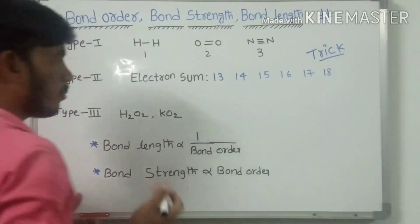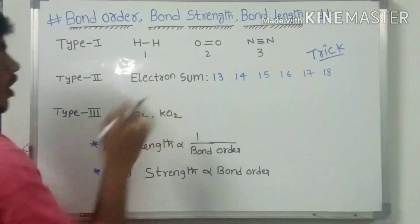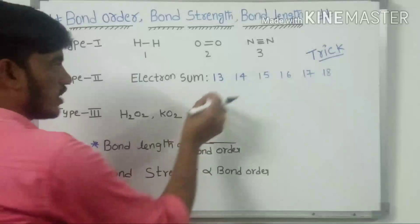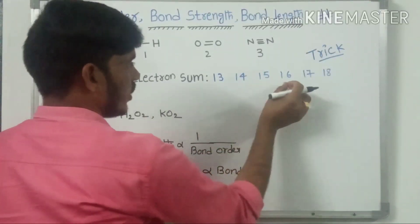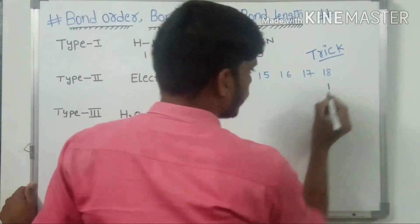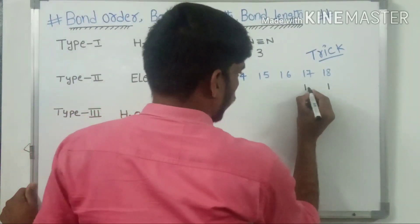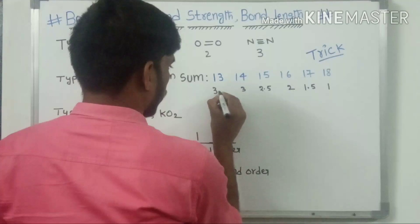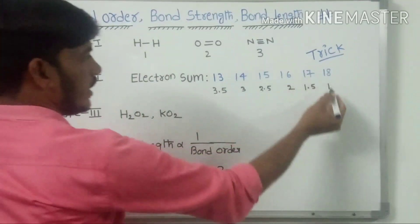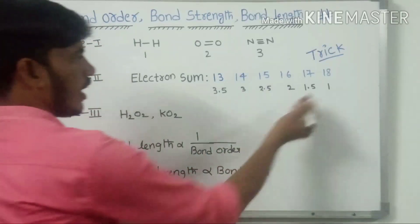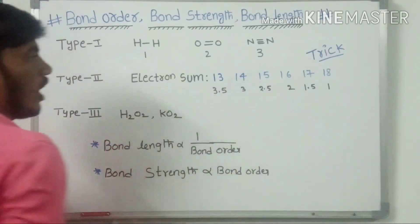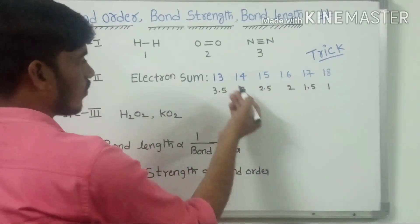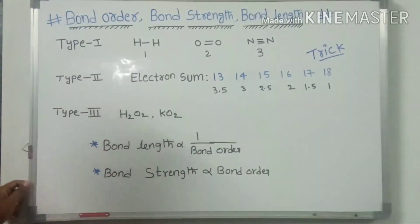Another type is based on the sum of electrons. This is the trick for bond order, bond strength, and bond length. To find the bond order, find the total electron sum. The table is: 18 electrons → bond order 1; 17 → 1.5; 16 → 2; 15 → 2.5; 14 → 3; 13 → 3.5. As the electron number decreases, the bond order increases.